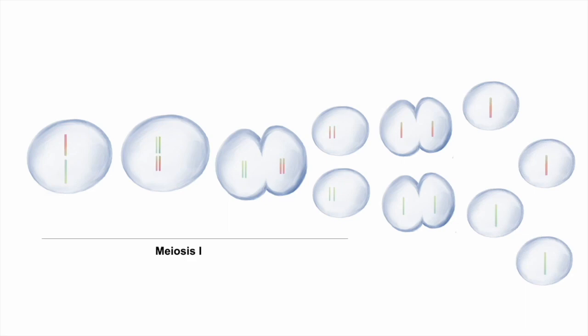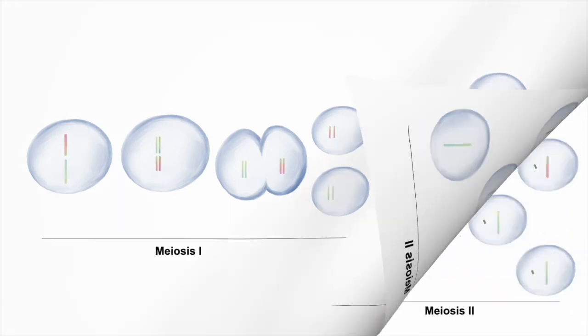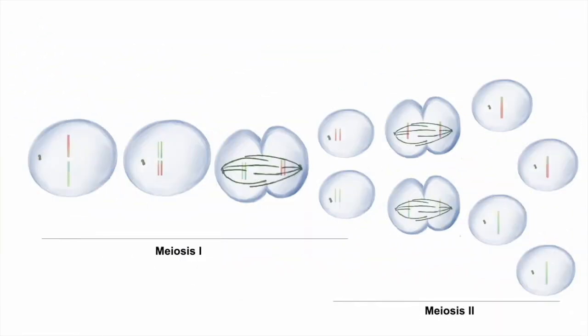In meiosis, cells go from diploid to haploid by undergoing two sequential chromosome segregation events, called meiosis I and meiosis II. The spindle is the apparatus required to segregate the chromosomes. Spindles are built out of microtubules.